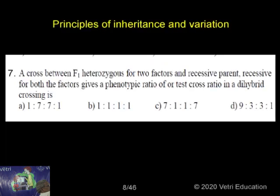The monohybrid test cross ratio is 1:1. The dihybrid test cross ratio is 1:1 squared, which is 1:1:1:1 — that is, 1 repeated four times. For a trihybrid cross, the test cross ratio is 1 repeated eight times. So for a dihybrid, that is the answer they are asking for.